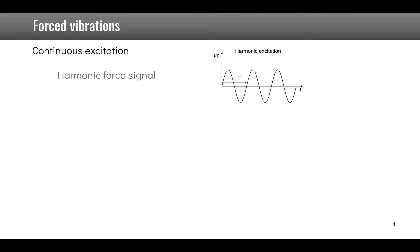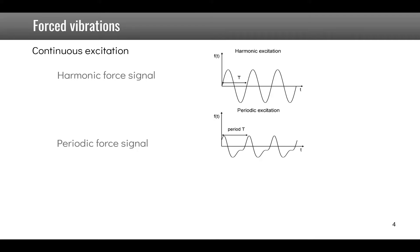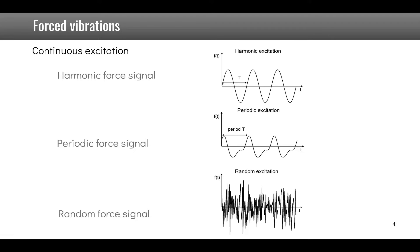Forced vibrations are vibrations where the excitation to the system is continuous, and there can be different types of excitation signals. The first and simplest is harmonic excitation, in the form of a sine or cosine. The second, more general one, is a periodic force signal where the signal repeats itself over a period T. The third type is a random signal where there is no real structure to the signal.